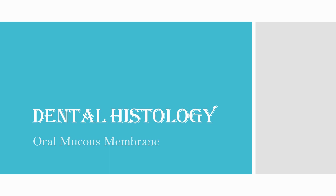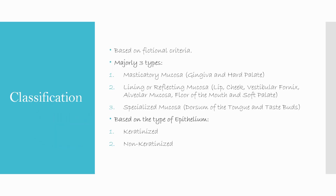The oral mucosa is the pink lining you see in your mouth. It also contains the tongue papillas, the cheek epithelium, the lips epithelium, and all these constitute the oral mucous membrane. So let's start. First of all, the classification based on functional criteria — these are measured with three types.